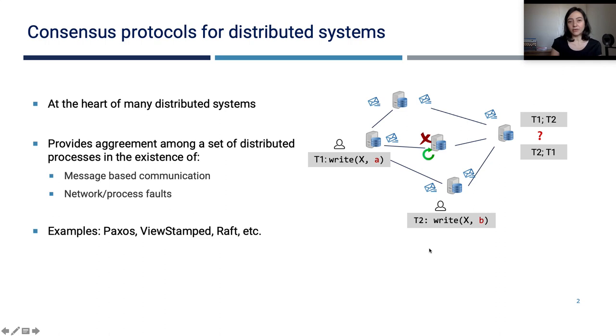In a strongly consistent system, all the nodes need to agree on the order they will commit those transactions, and consensus protocols provide this agreement in the existence of asynchronous message-based communication and also network and process faults which cause some messages to be lost, some processes to be isolated or crashed.